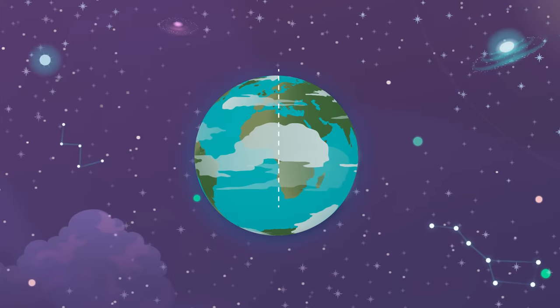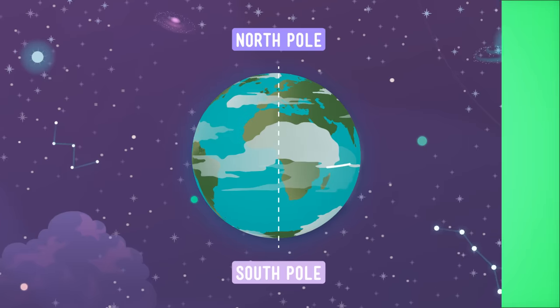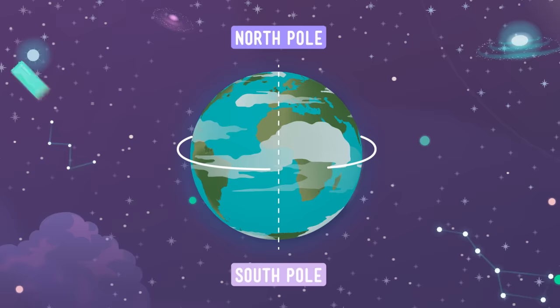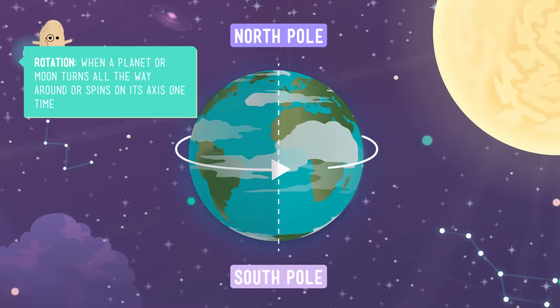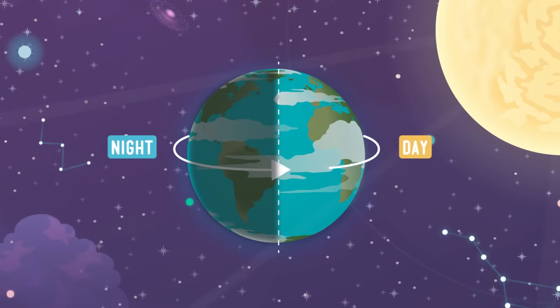Imagine a line passing through the center of the Earth that goes both through the North Pole and the South Pole. We call that invisible line the axis. Earth spins around on this axis like a top. This spinning movement is called the Earth's rotation, and the Earth's rotation is what gives us day and night, every day, all year.